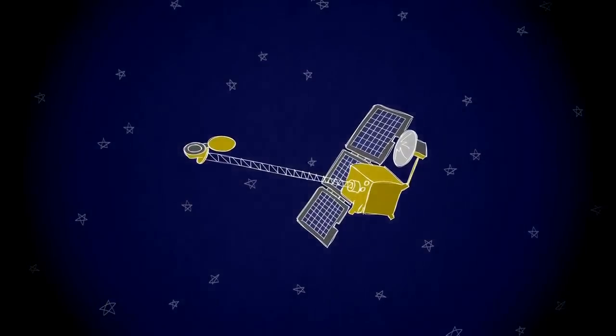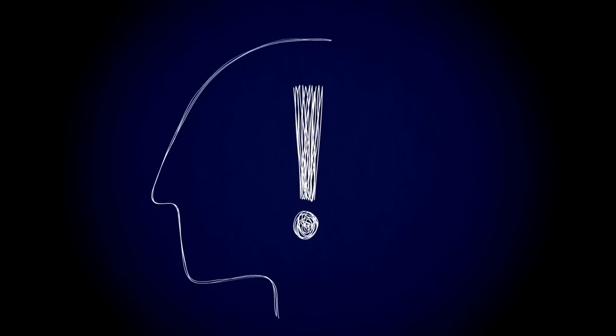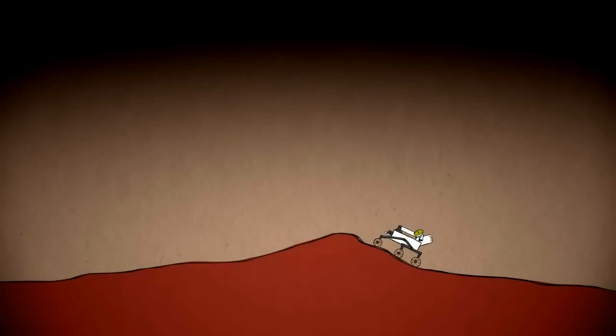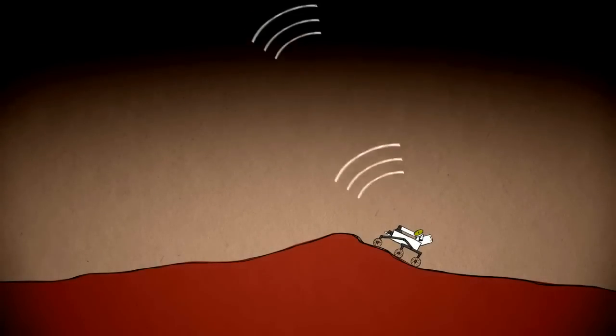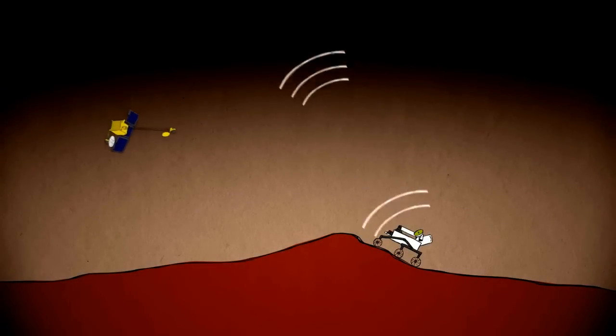Odyssey could perform as hoped, but we're still not home free. Engineers always think of what-ifs. For instance, what if the rover lands on a slope? If so, the low-flying Odyssey orbiter might not be able to pick up its signal.